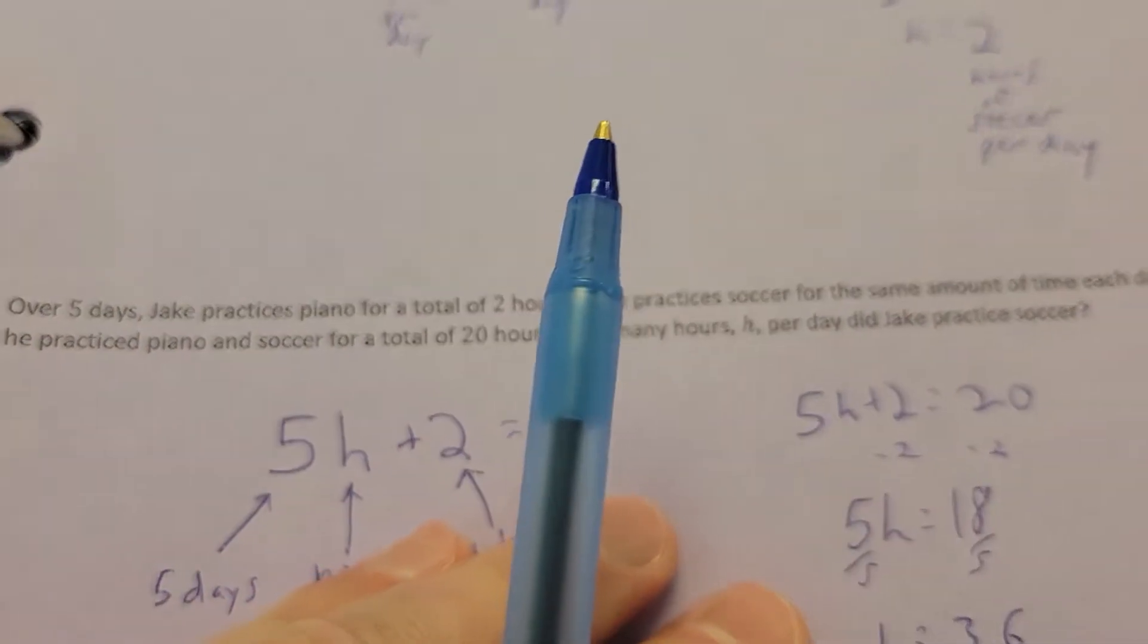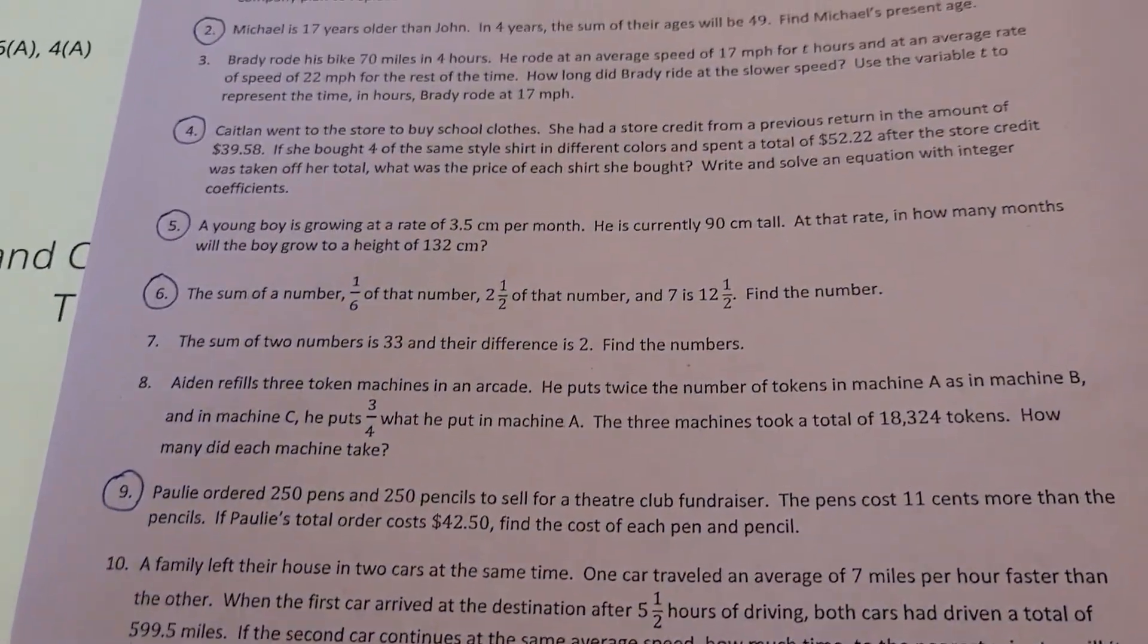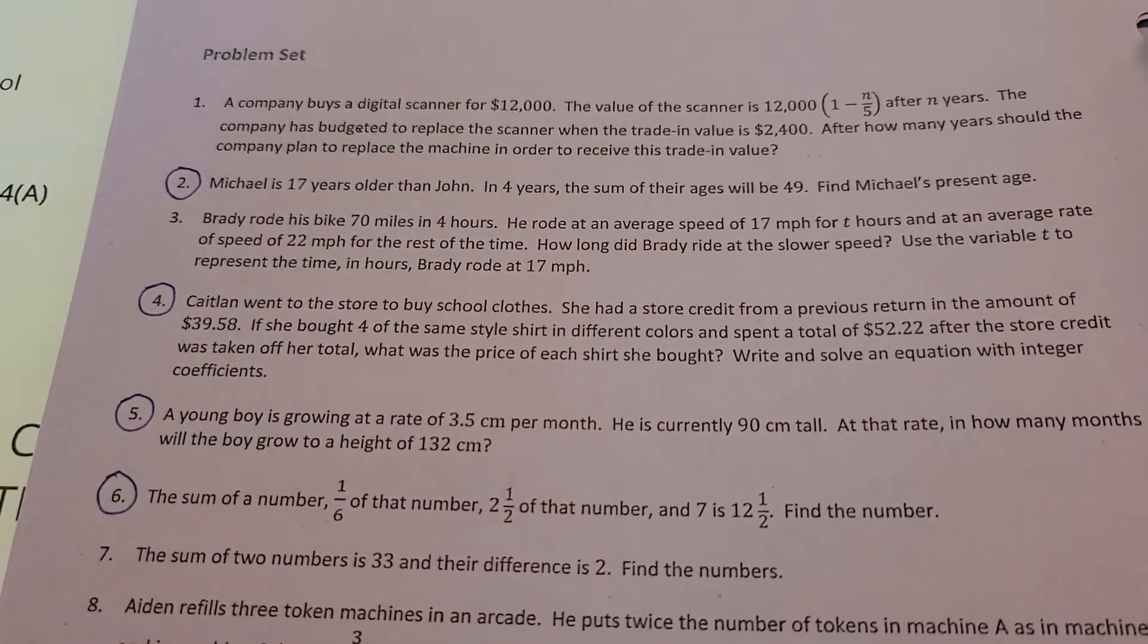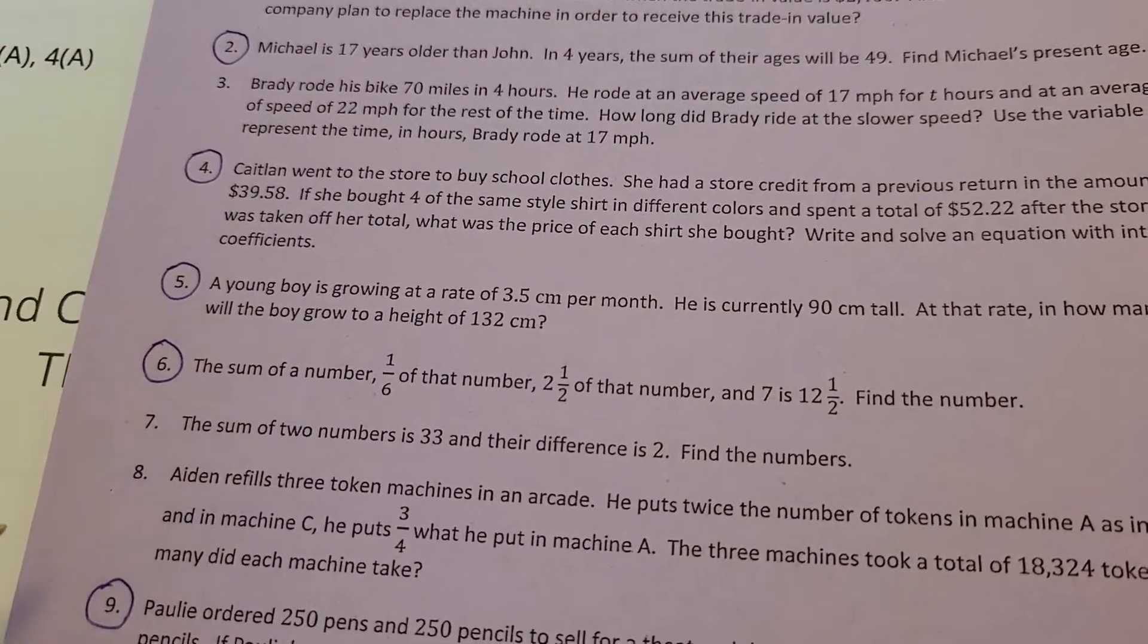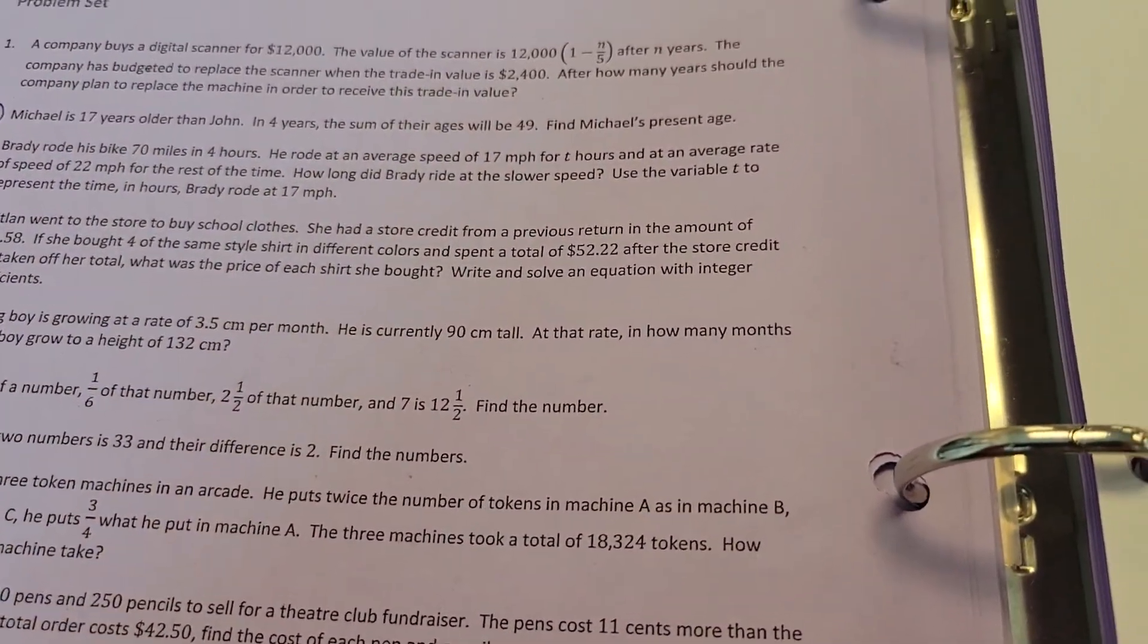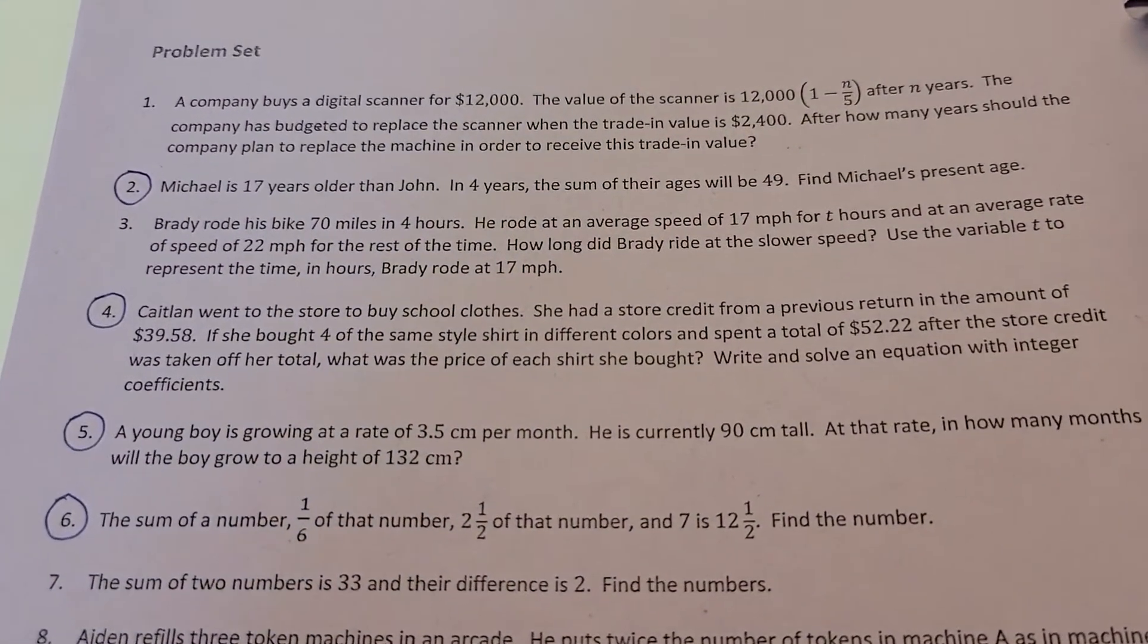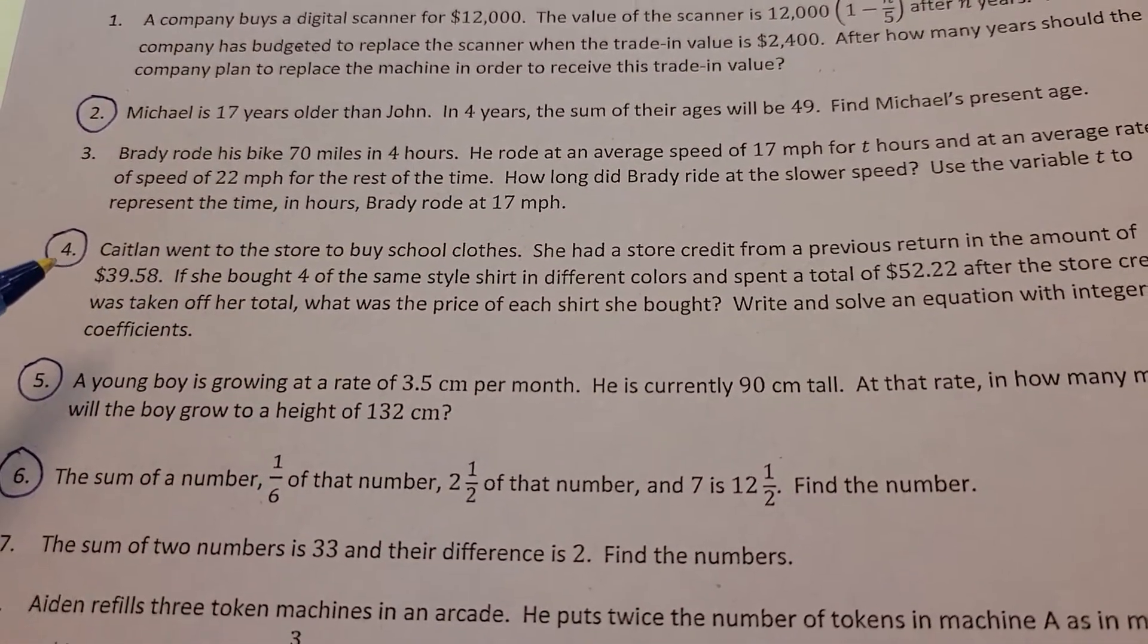Alright, what we're going to do is we are going to jump ahead to page 58. Now, there's only a few problems when we're working on page 58. This number is 2, 4, 5, 6, and number 9. Alright? So, what we're going to do here is, obviously, you guys can read these on your own. Alright?